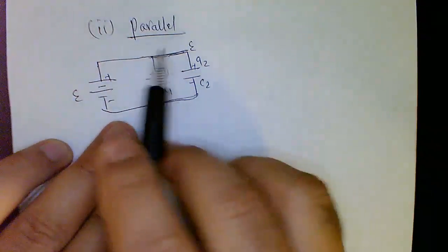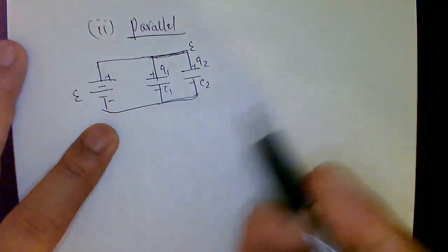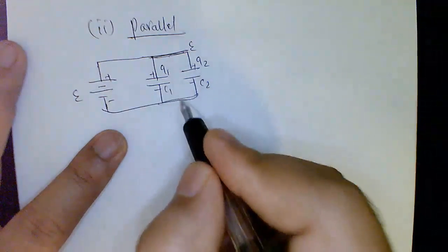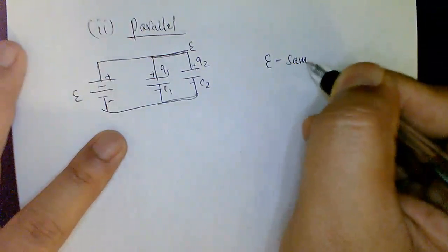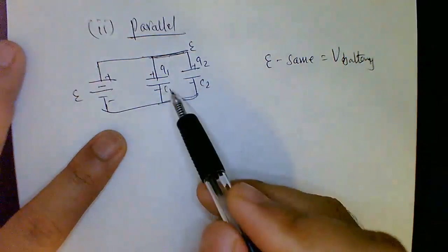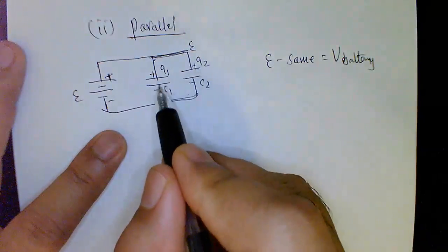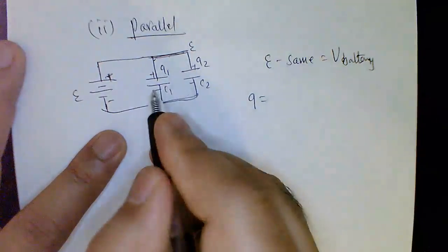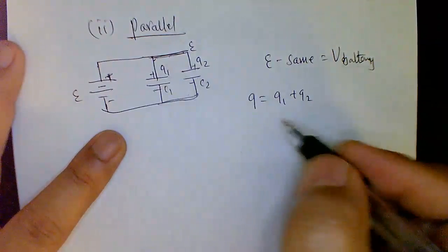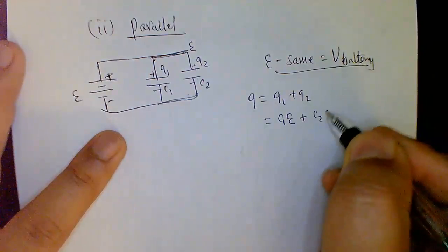For the parallel combination of two capacitors, the key point is that the voltage across both capacitors is the same — equal to the battery voltage E. The charge will be different depending on their capacitances. The total charge stored is Q = Q1 + Q2 by conservation of charge, where Q1 = C1·E and Q2 = C2·E, giving Q = (C1 + C2)·E.